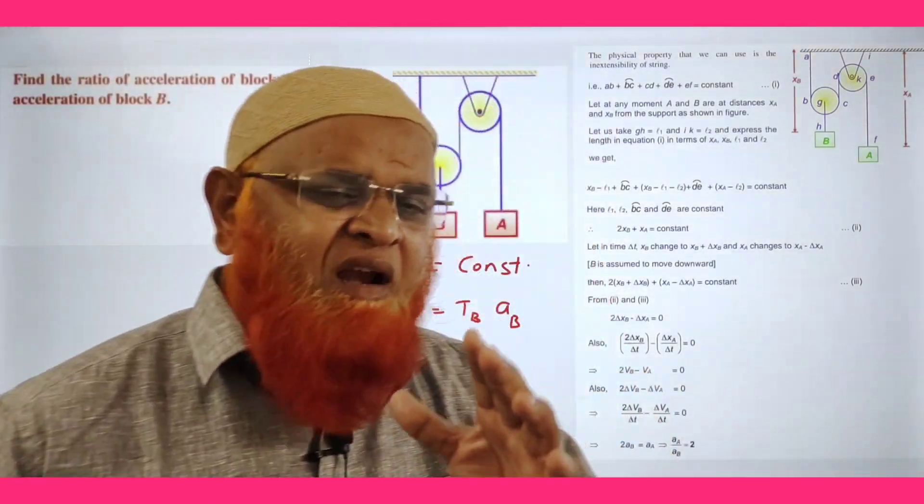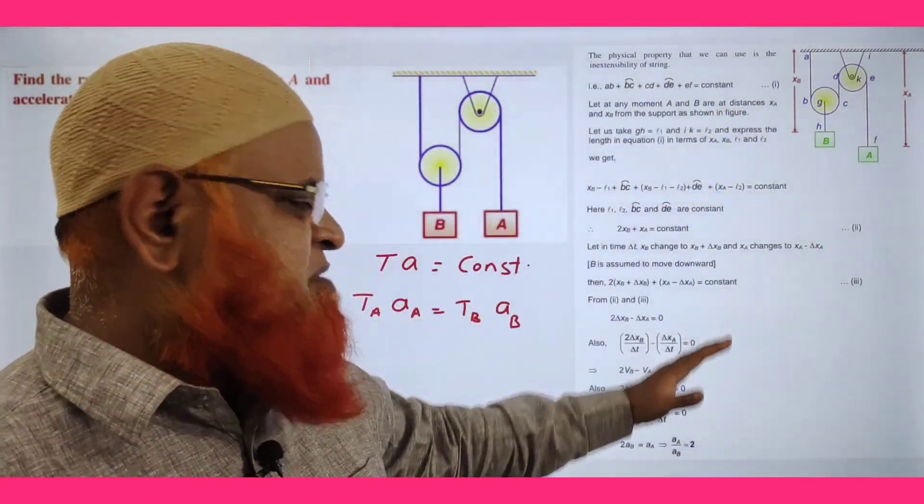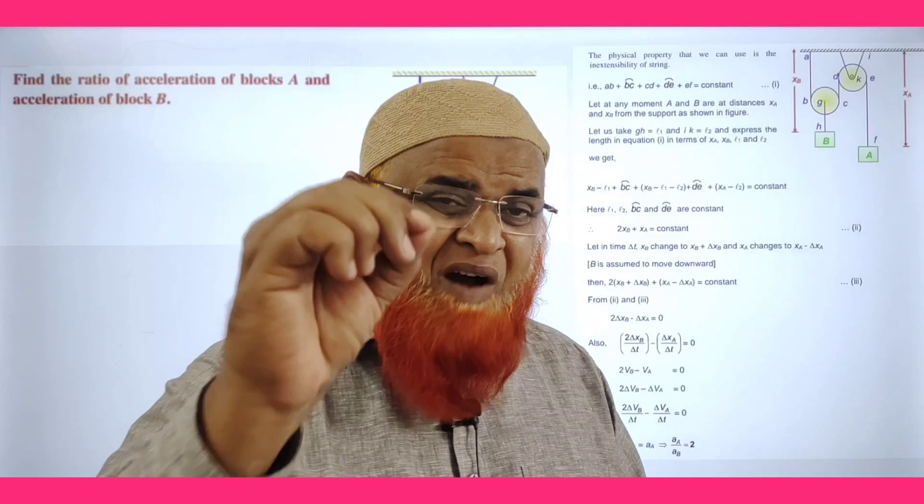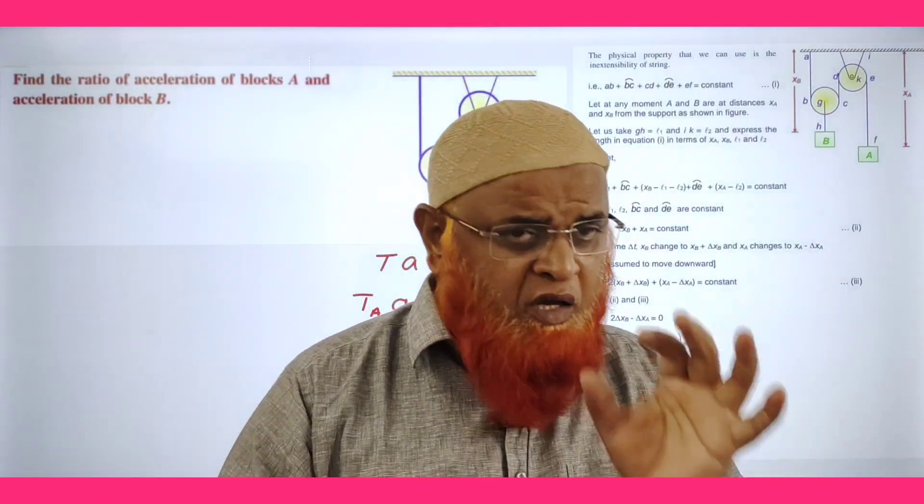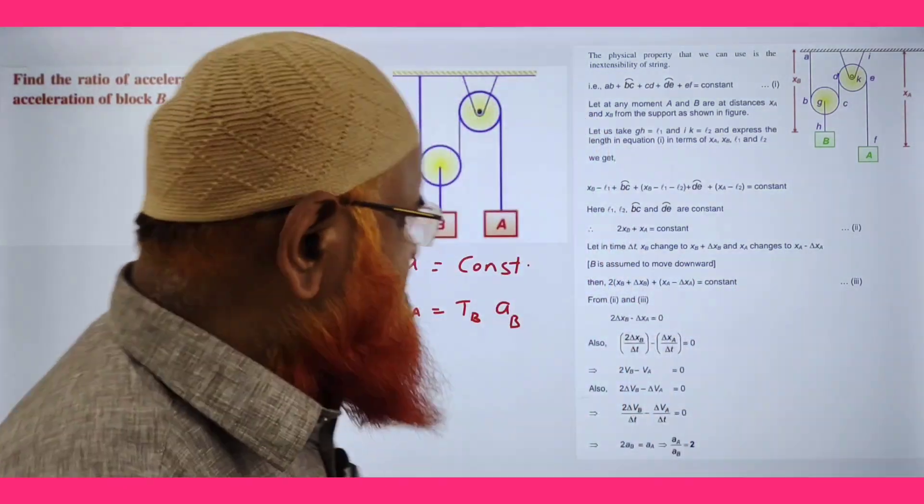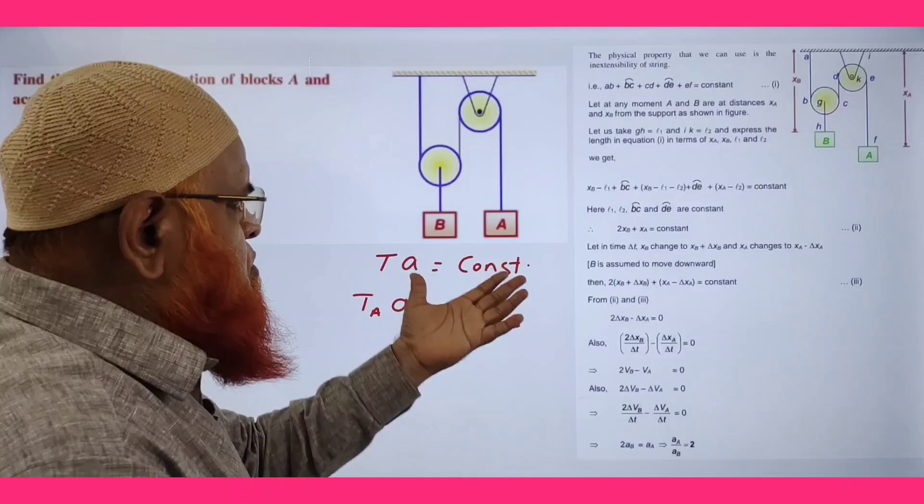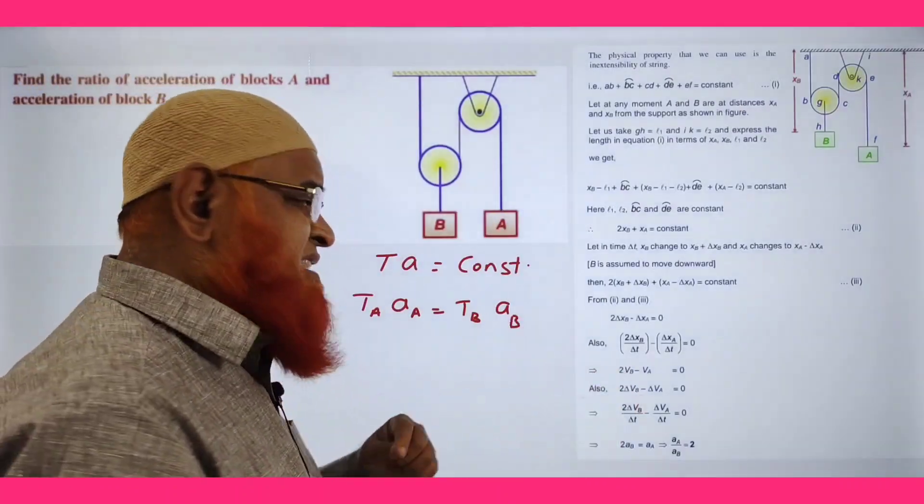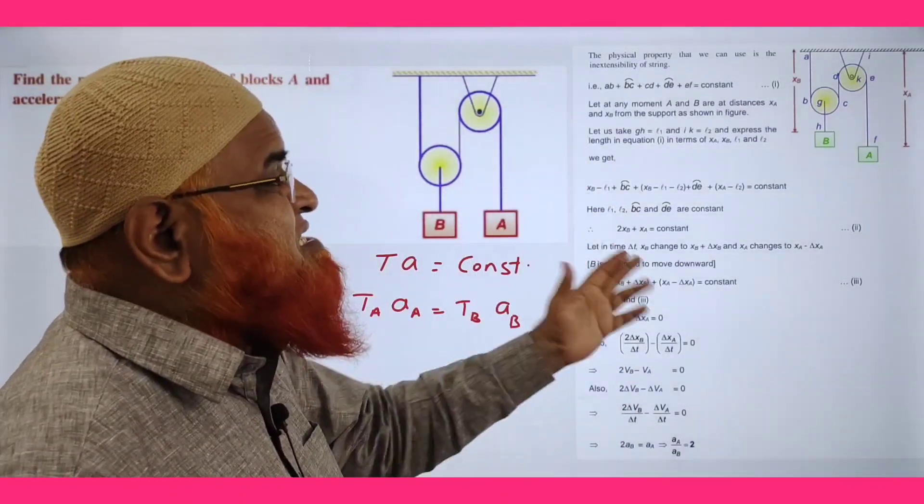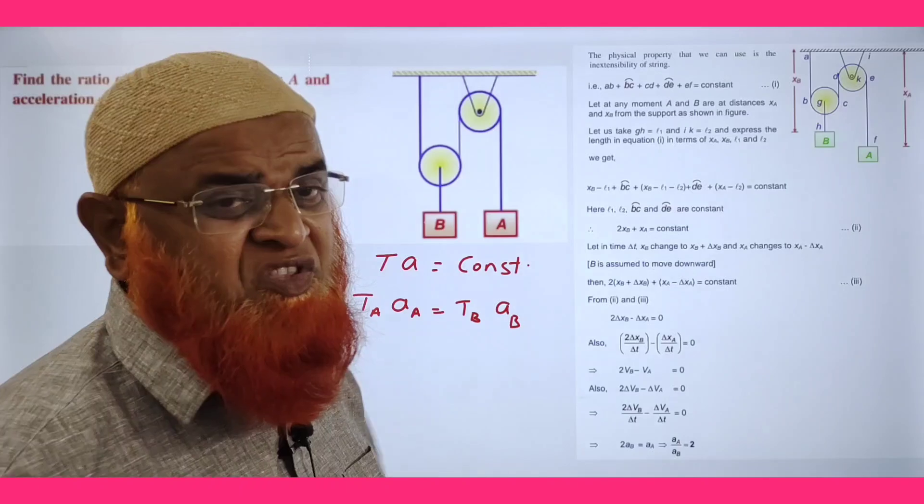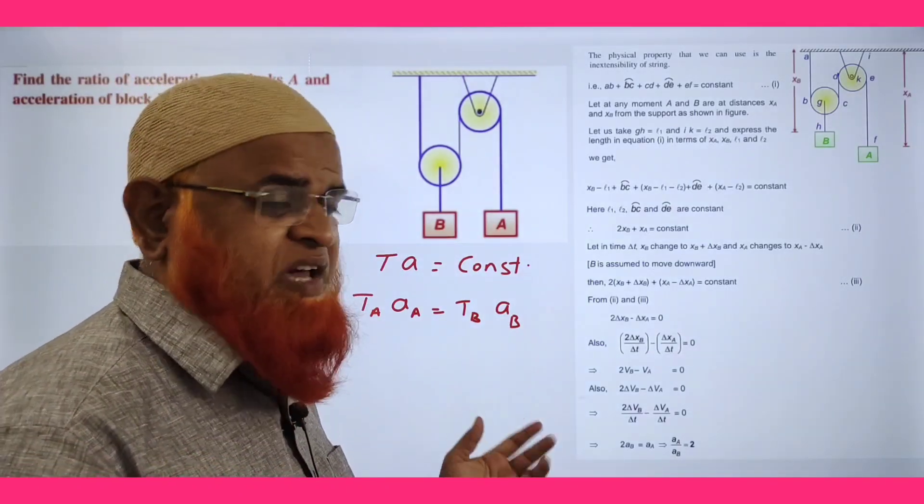My dear friends, this is the problem of laws of motion. See the lengthy methods given in the book. Let us bypass these methods and follow a simple logic. What is the logic? So this is a diagram having two blocks and two pulleys. In this, instead of following this constraints method, constraints method is very complex, very confusing.